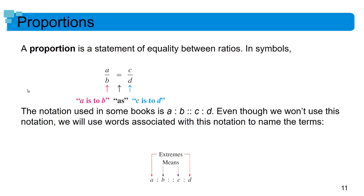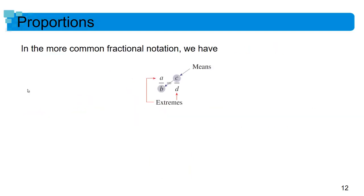Ratios are really nothing more than a specialized use of fractions. Proportions are just a specialized use of ratios — which is really just a specialized use of fractions. All a proportion is, is two ratios set equal to each other, saying these two fractions are equivalent. So 'a is to b as c is to d' basically says a over b equals c over d, and if that's true, then we know their cross products are equal.